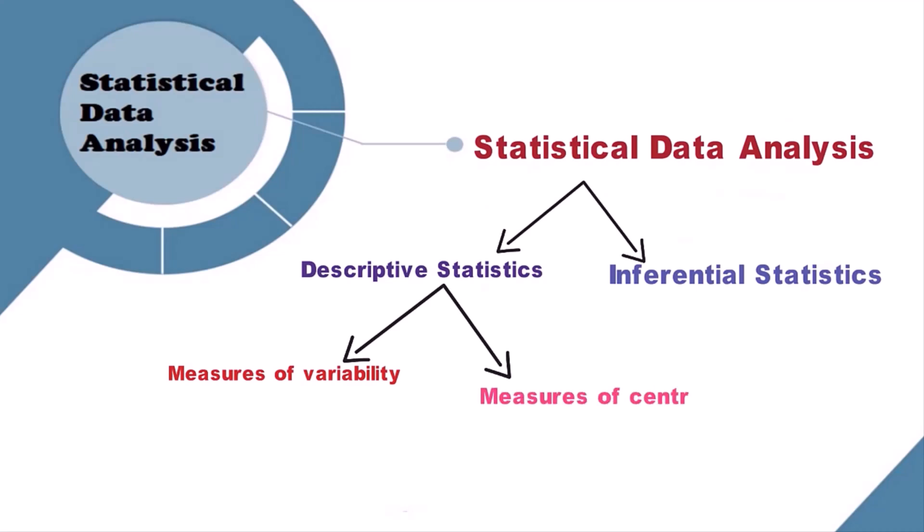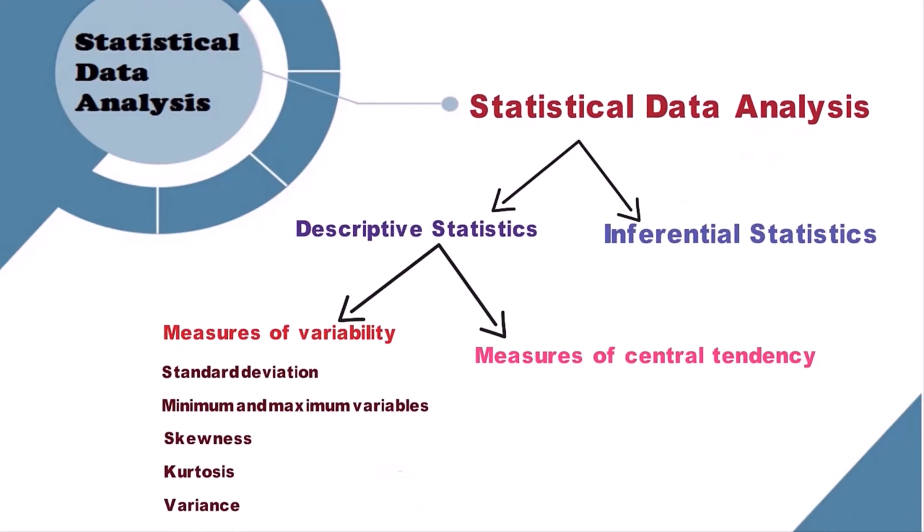Descriptive statistics are divided into measures of variability and measures of central tendency. Measures of variability consist of standard deviation, minimum and maximum variables, skewness, kurtosis, and variance, while measures of central tendency include the mean, median, and mode.